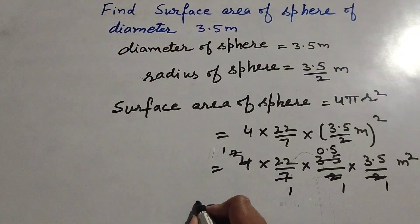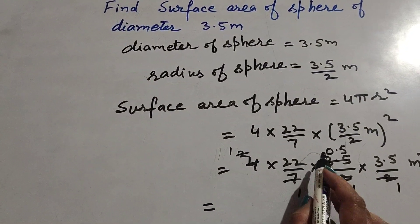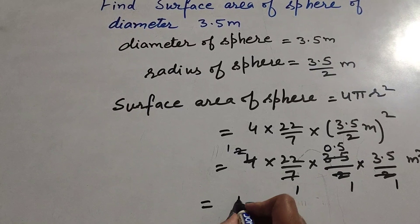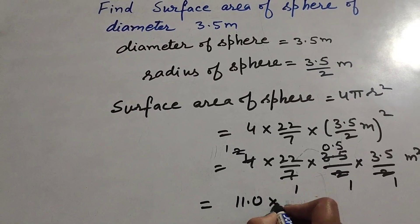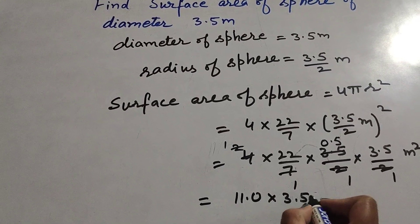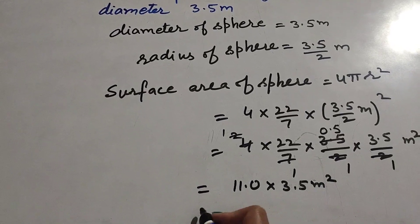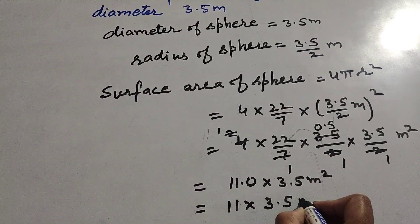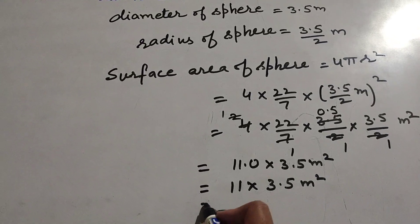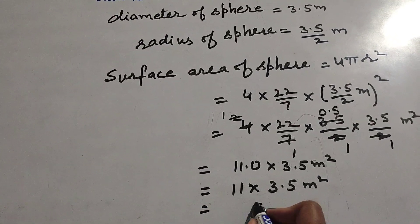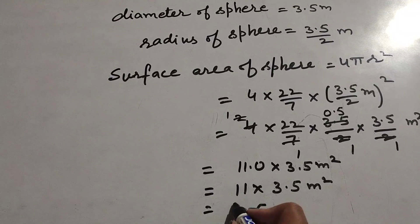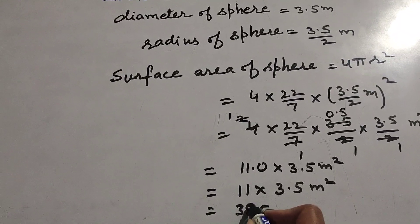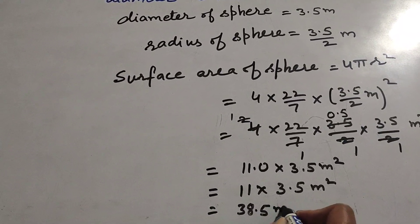So 22 multiply by 0.5, we get answer 11.0 multiply 3.5 meters squared. So now 11 is multiplied by 3.5 meters squared. And 11 multiplied by 3.5, we get answer 38.5 meters squared.